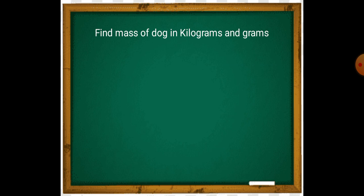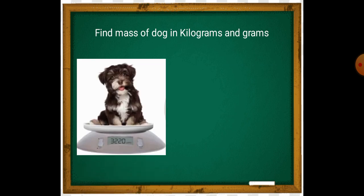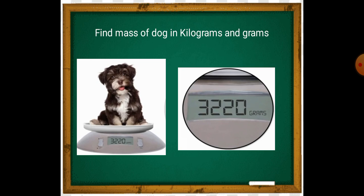Find the mass of dog in kilograms and grams. The dog has a mass of 3,800 grams.